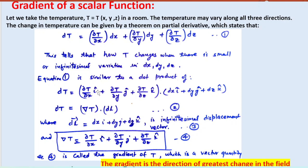This equation is similar to the dot product of two vectors: [(∂T/∂x)î + (∂T/∂y)ĵ + (∂T/∂z)k̂] · [dx î + dy ĵ + dz k̂]. The second vector is the displacement vector dl, so dT = ∇T · dl. This vector ∇T is known as the gradient of T, which is a vector quantity, and the gradient of a function gives the direction of the greatest change in the field.